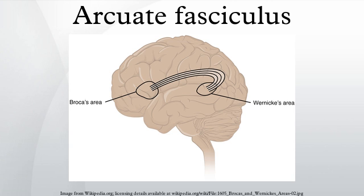Research indicates more diffuse termination of the fibers of the arcuate, both rostrally and caudally, than previously thought. While the main caudal source of the fiber tract appears to be posterior superior temporal cortex, the rostral terminations are mostly in premotor cortex, part of Brodmann area 6.